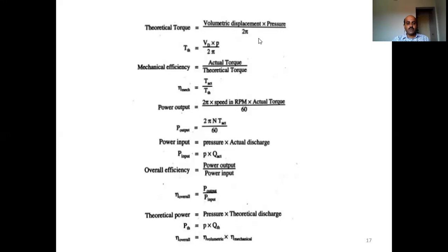Once you have theoretical torque and actual torque, you can calculate mechanical efficiency, which is the ratio of actual torque to theoretical torque: η_mechanical = T_actual / T_theoretical. Power output is calculated as 2π into speed into RPM into actual torque. Power input is pressure into actual discharge.